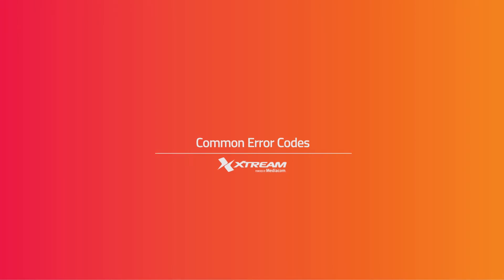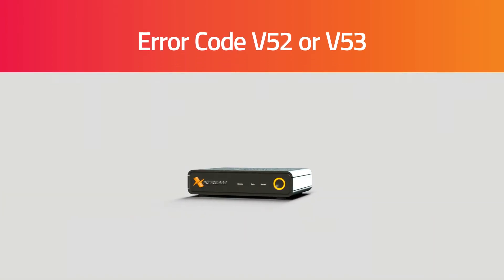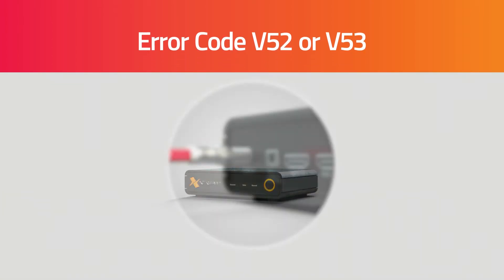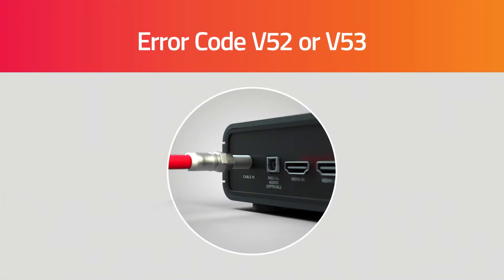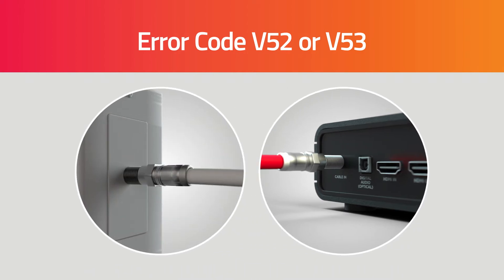Error code V52 or V53 indicates that there's a signal issue. Check your coaxial connection at the back of the TiVo box as well as the wall outlet to ensure the connection is tight and the fitting has not come loose.